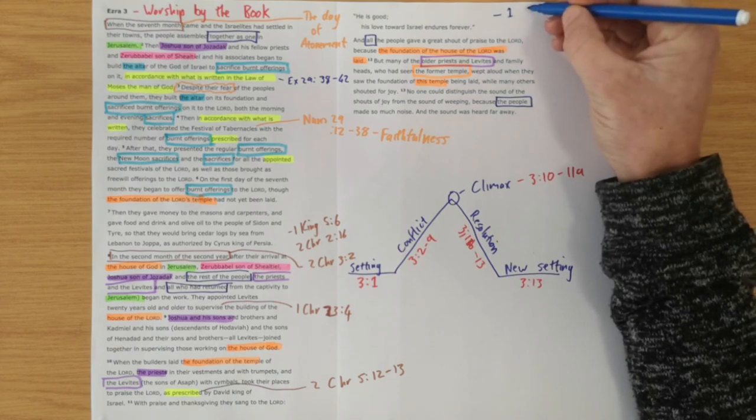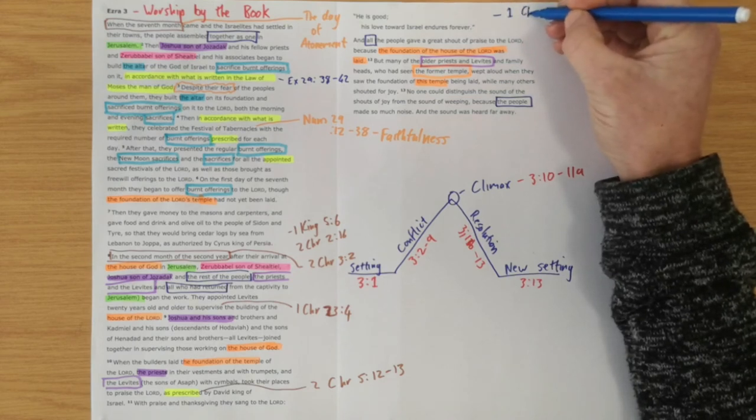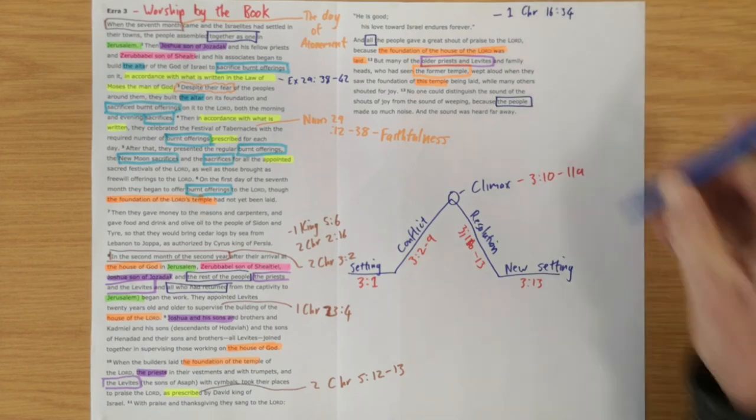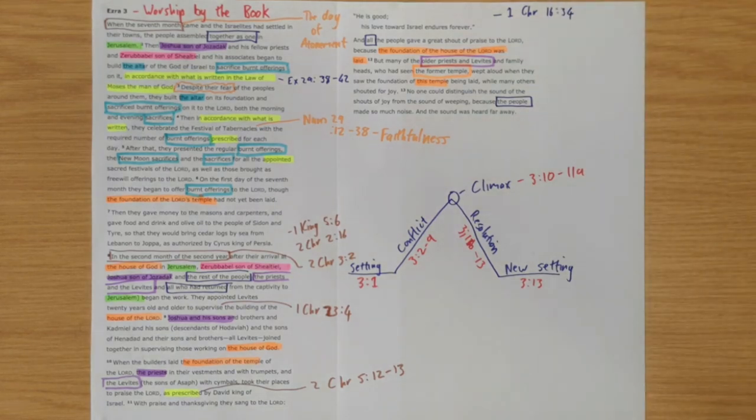In the same way that king David and king Solomon had done. So we see here in 1 Chronicles 16 verse 34 we see them worshiping this way. But there's something bigger happening here.